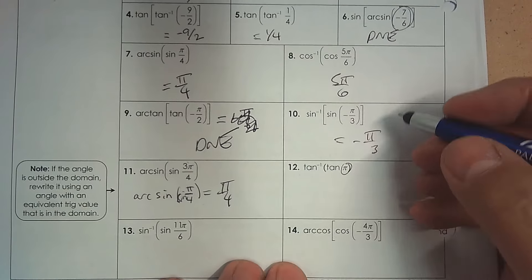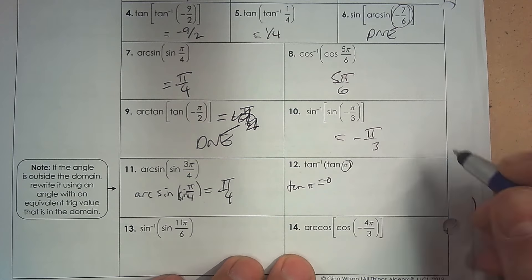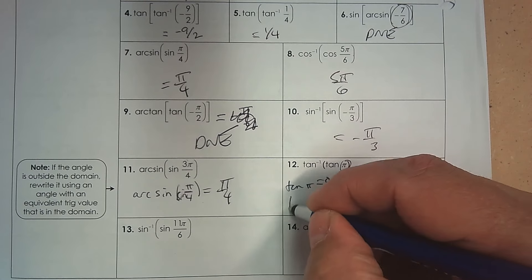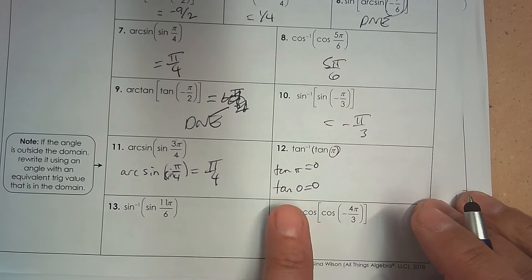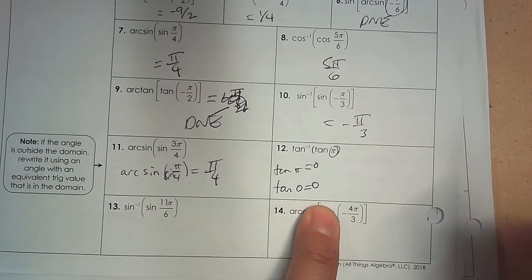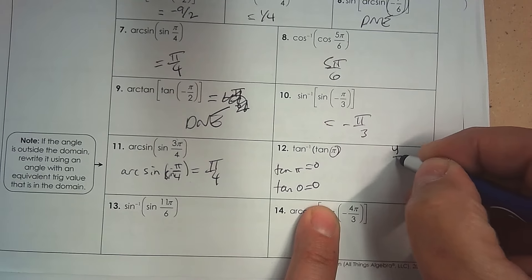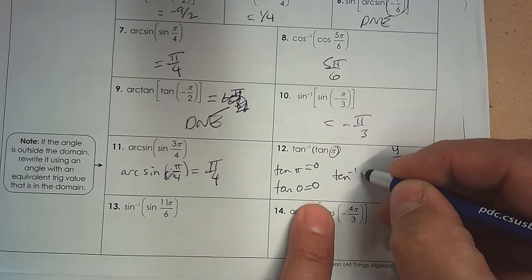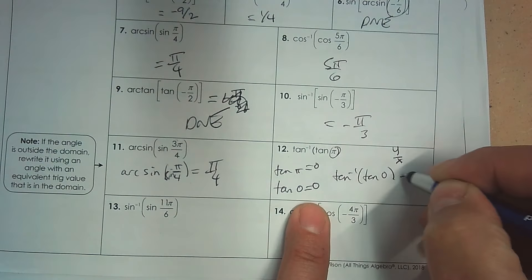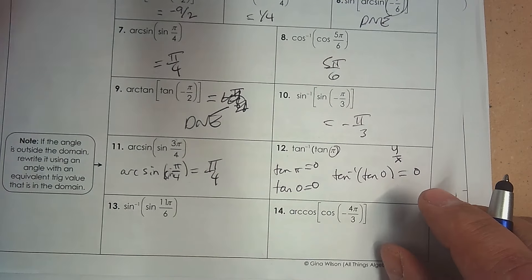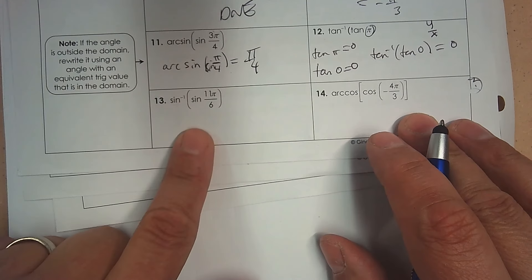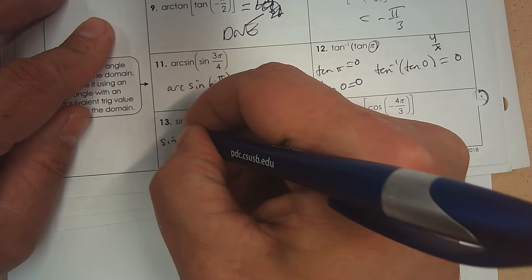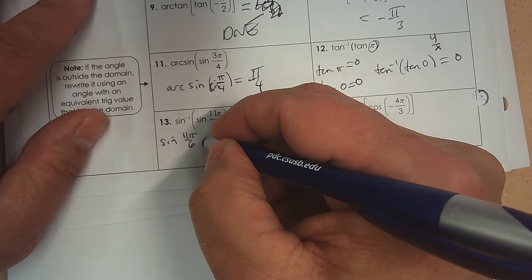Number 12: pi is not in the arc sine range, so what does tangent of pi equal? Tangent pi equals 0. In the domain restriction, the angle that also gives tangent equal to 0 is 0 itself. So rewrite using tangent of 0 equals 0, they undo each other, and the answer is 0.